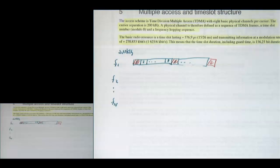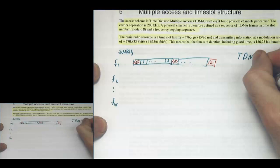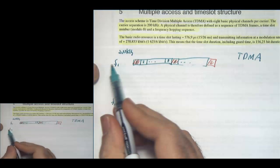Eight users each get one-eighth of the pie — it's just a way of dividing resources. This is called TDMA, Time Division Multiple Access. Assigning users on different subcarriers is called Frequency Division Multiple Access. So there's a combination of frequency division and time division.